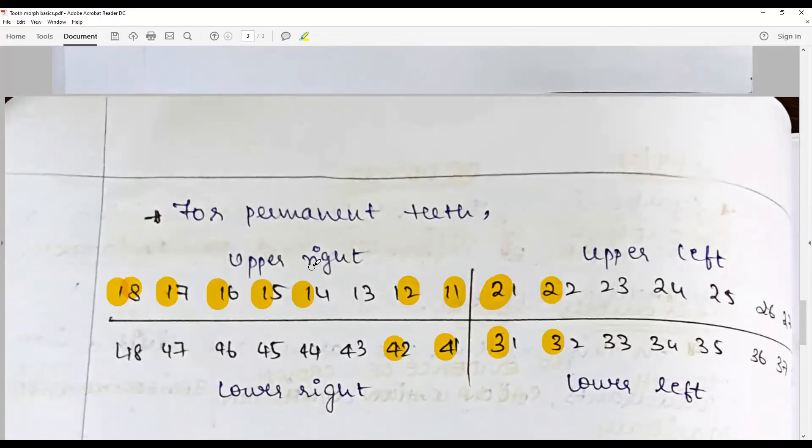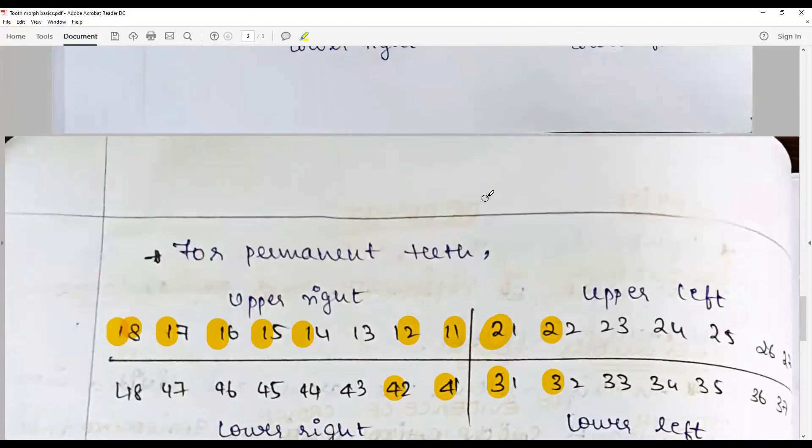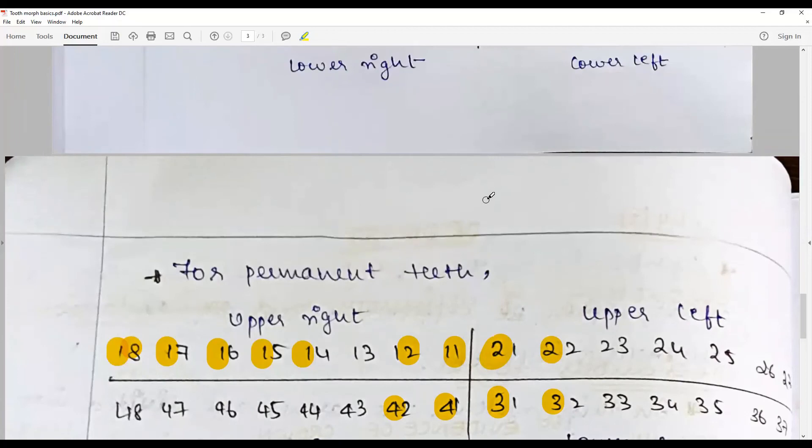So central incisor has 1, third molar has 8. It is a two-digit system, the first digit refers to the quadrant, quadrant is clockwise, upper right permanent is named accordingly 1 through 4, and deciduous 5 to 8. The tooth number is the second number, lesser the number, closer to the midline.